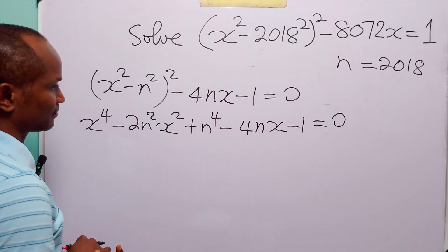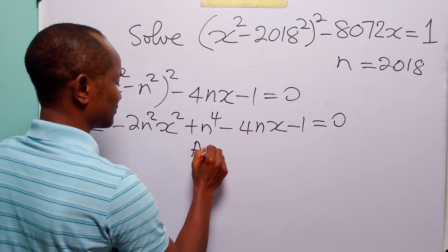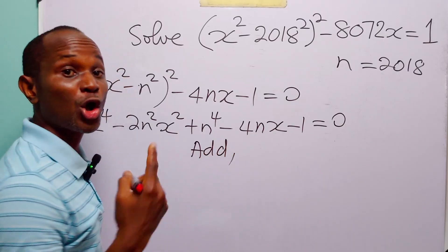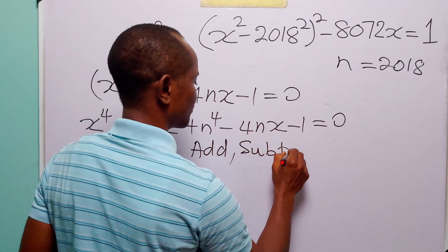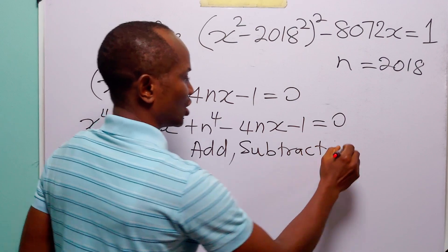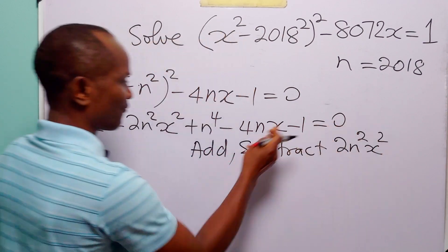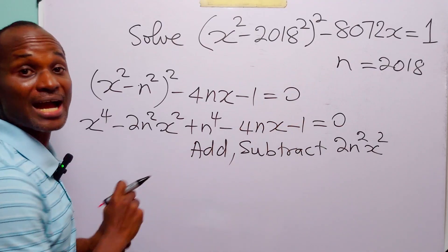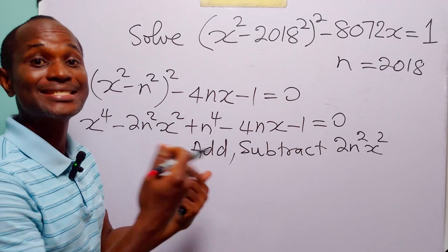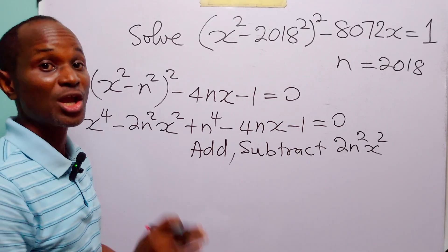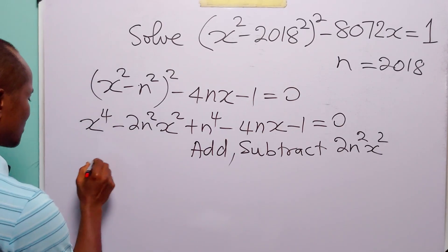The next thing we are going to do is add and also subtract 2n²x² from the left-hand side. Remember: when we add and subtract the same quantity, we have not changed anything. So here is what we now have.